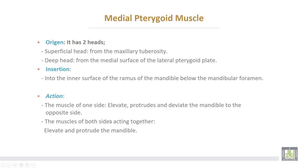The medial pterygoid muscle also takes origin by two heads. The superficial head arises from the maxillary pterygoid, and the deep head arises from the medial surface of the lateral pterygoid plate. Insertion of the medial pterygoid muscle is into the inner surface of the ramus of the mandible, below the mandibular foramen. Action of the medial pterygoid for one side: elevate, protrude, and deviate the mandible to the opposite side. The muscles of both sides acting together elevate and protrude the mandible.